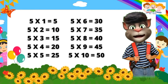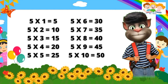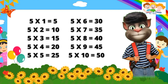Five ones are five. Five twos are ten. Five threes are fifteen. Five fours are twenty. Five fives are twenty-five. Five sixes are thirty. Five sevens are thirty-five. Five eights are forty. Five nines are forty-five. Five tens are fifty.